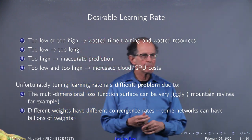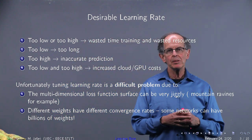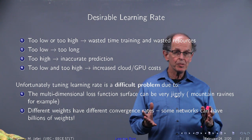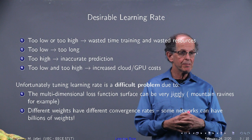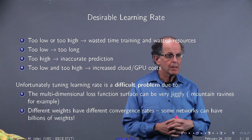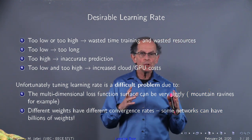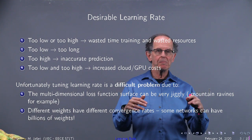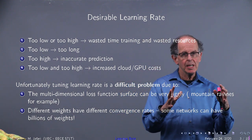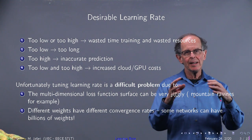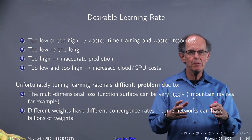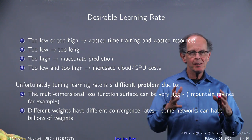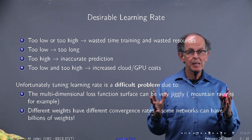This is a current problem. Desirable learning rates have been attacked at many different fronts for over the last 25 years. Unfortunately, tuning is really hard. Why? Because the multidimensional loss function is very jiggly — it can have rough areas, saddle points, ravines, and bulges everywhere.